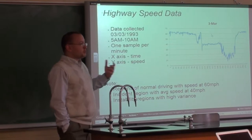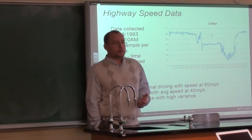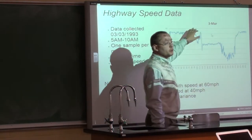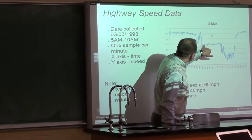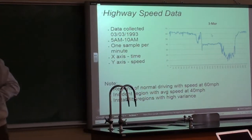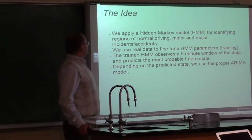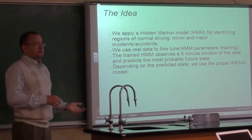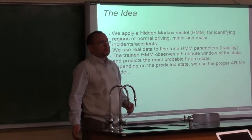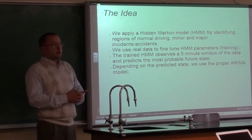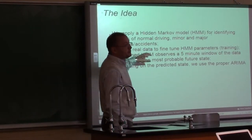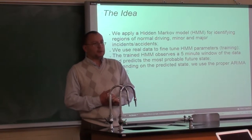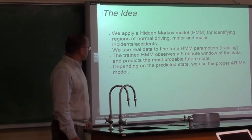These regions naturally push us to think about a stochastic model like a hidden Markov model that can switch. When the model is in one state we can assume a normal distribution, and in another state we can also assume a normal distribution. So here's the idea: we apply a hidden Markov model for identifying regions of normal driving, regions with minor incidents, and regions with major accidents. We're going to use real data for training or fine-tuning, and feed the HMM a 5-minute interval of recent events and ask the model what's going to be the next state — the prediction. Depending on the predicted state, we use the proper RIMO model.